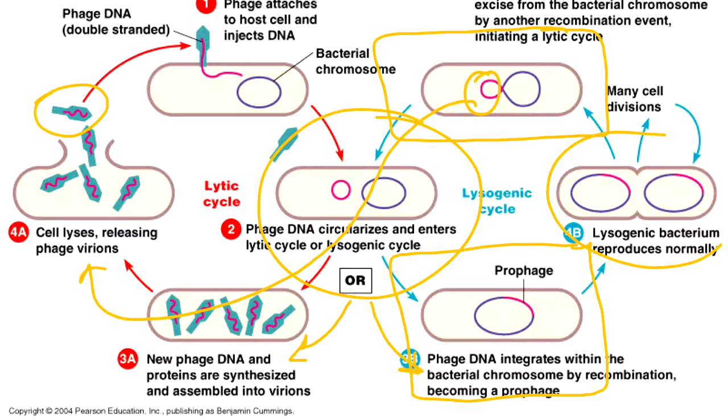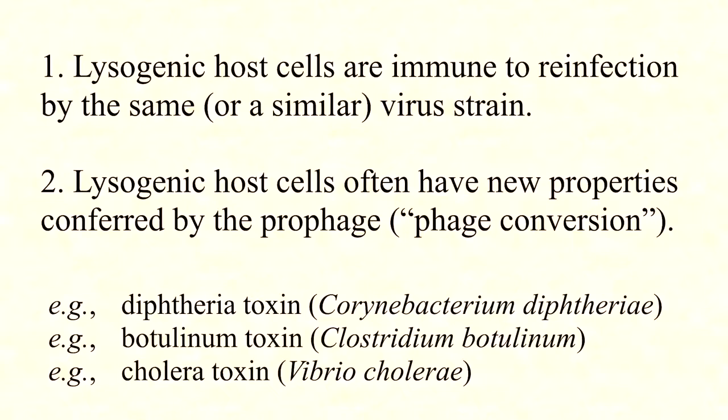Why does lysogeny matter? It turns out lysogeny changes the host bacterium in important ways. First, lysogenized host cells are often immune to reinfection by the same or similar virus strain — it appears to be a way for that virus to claim the host cell as its own, a form of competition. For example, in Salmonella, the phage changes the O-polysaccharide on the LPS so that it's no longer accessible for attachment and doesn't act as a receptor for similar viruses.